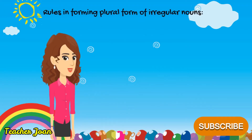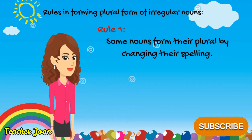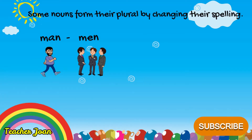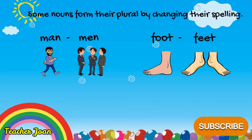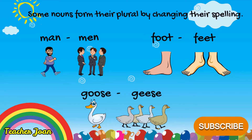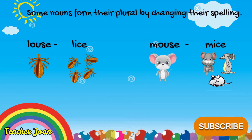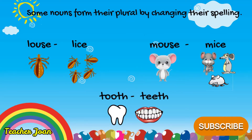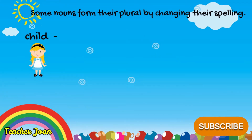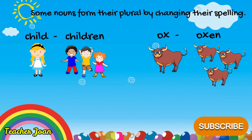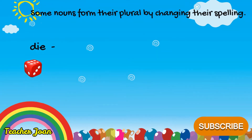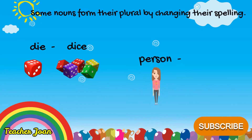There are rules in forming the plural form of irregular nouns. Some nouns form their plural by changing their spelling: Man — Men, Foot — Feet, Goose — Geese, Louse — Lice, Mouse — Mice, Tooth — Teeth, Child — Children, Ox — Oxen, Woman — Women, Die — Dice, Person — People.